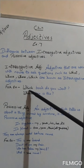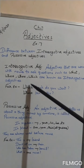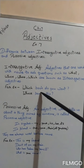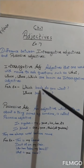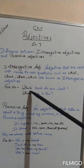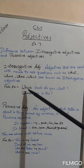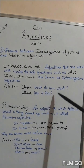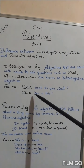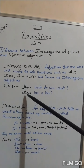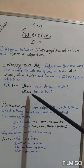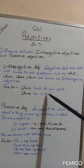यह देखिए, here the adjective 'which' is given with noun 'book'. So a noun is given with adjective 'which', so this is an interrogative adjective. And here also, noun 'pen' is given with adjective 'whose', so this is also an interrogative adjective.